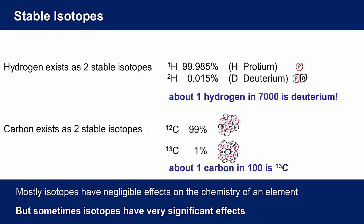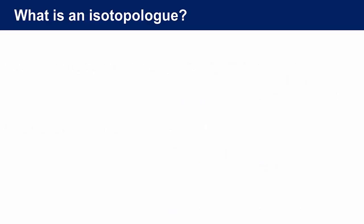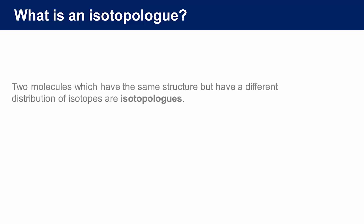Different isotopes of the same element will have different nuclear magnetic moments. Given that elements often exist in more than one isotopic form, we should expect in molecules and compounds to find that different isotopes of an element are randomly distributed. We would say that two molecules, which have identical chemical structures, are isotopologues if they do not have identical distributions of all of the isotopes present in the molecule.